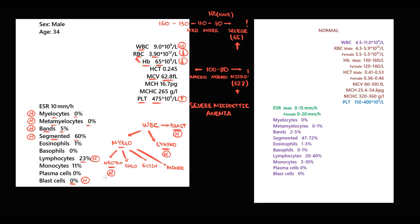All forms of neutrophils are perfectly normal. Basophils are normal, eosinophils are normal, and monocytes are also normal. Erythrocyte sedimentation rate is also within normal range. So the conclusion is severe microcytic anemia accompanied by a slight increase in platelets.